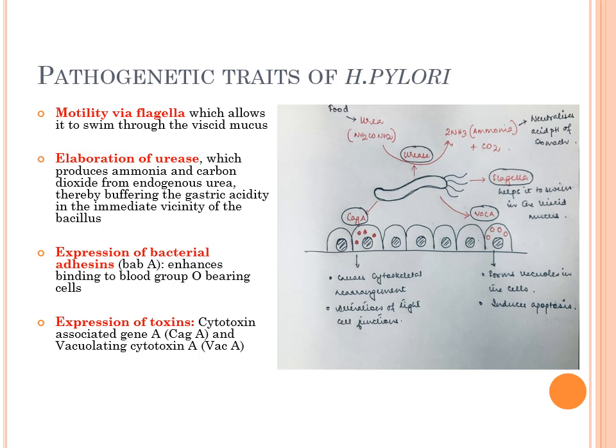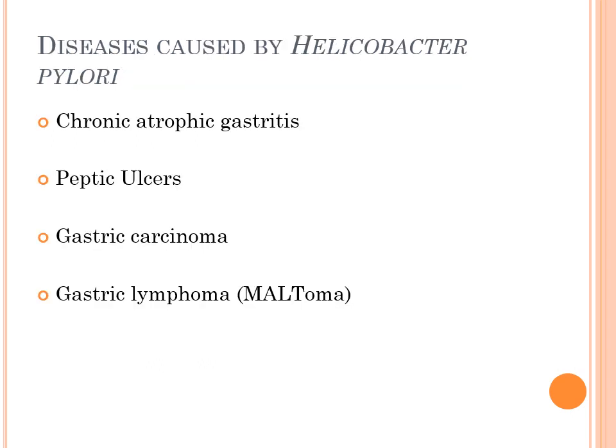The diseases caused by Helicobacter pylori, commonly asked in vivas, include: chronic atrophic gastritis, peptic ulcers, gastric carcinoma, and gastric lymphoma — most commonly MALToma, or mucosa-associated lymphoid tissue lymphoma.